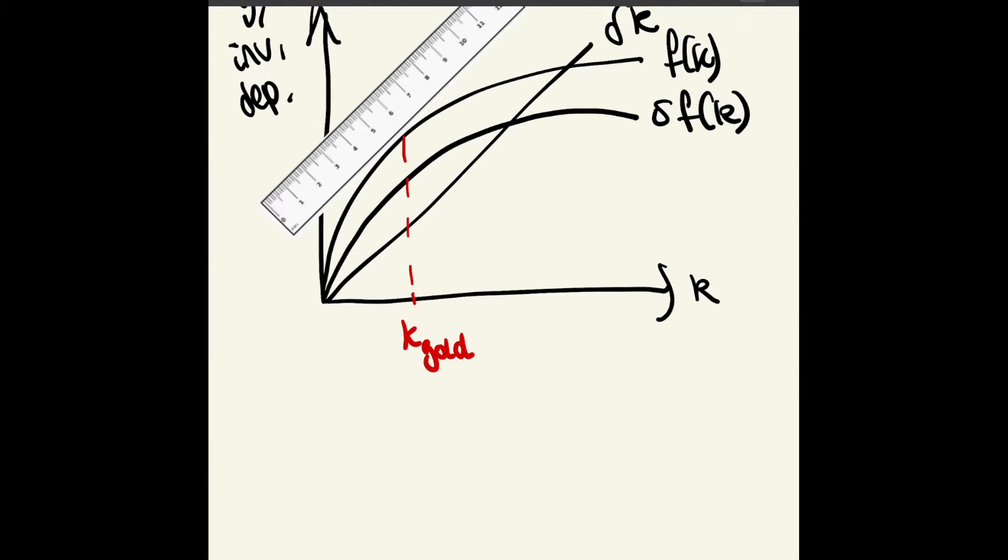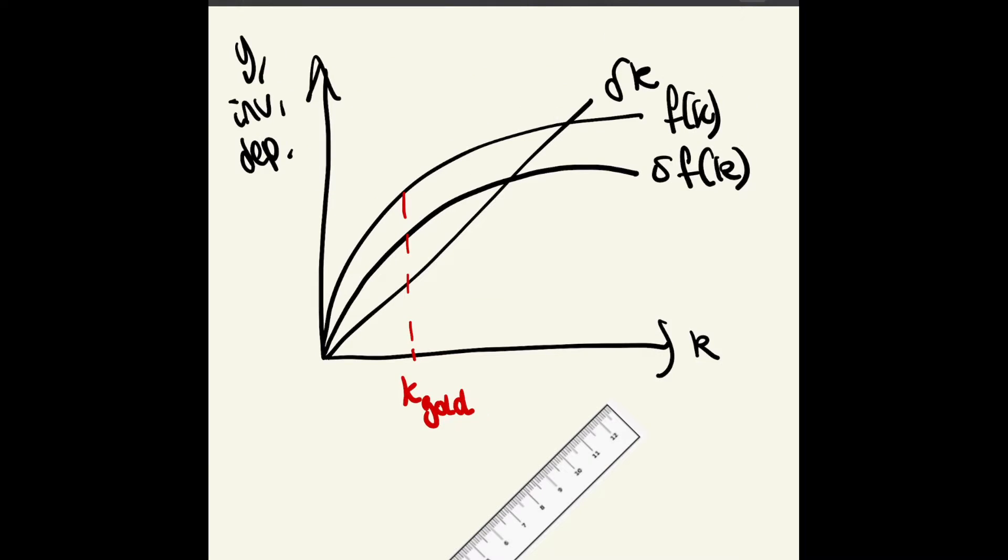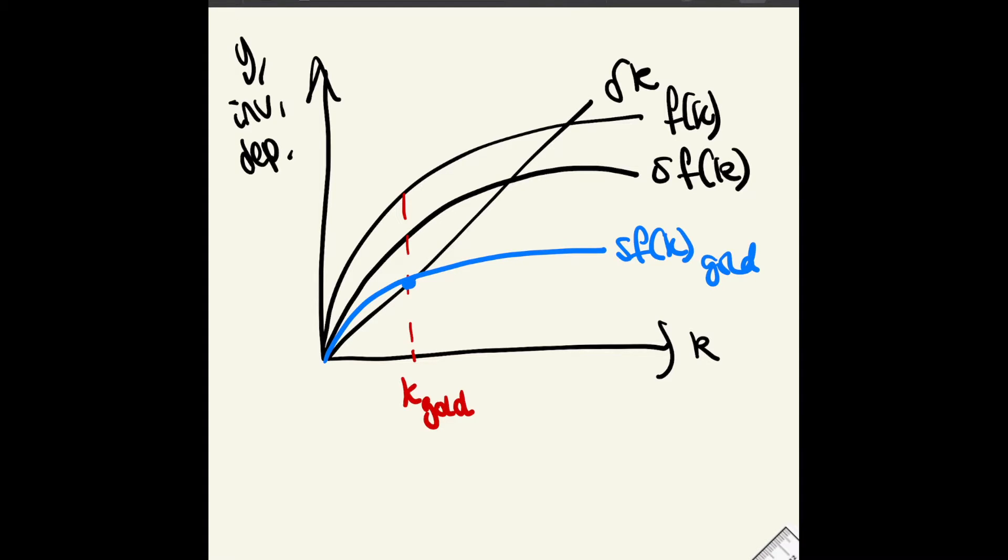At our actual steady state where sf(k) and delta k cross, that isn't k gold. How can we change the savings rate so that we'd be at k gold? We want the sf(k) curve to intersect lower down where the red dotted line hits the delta k curve.